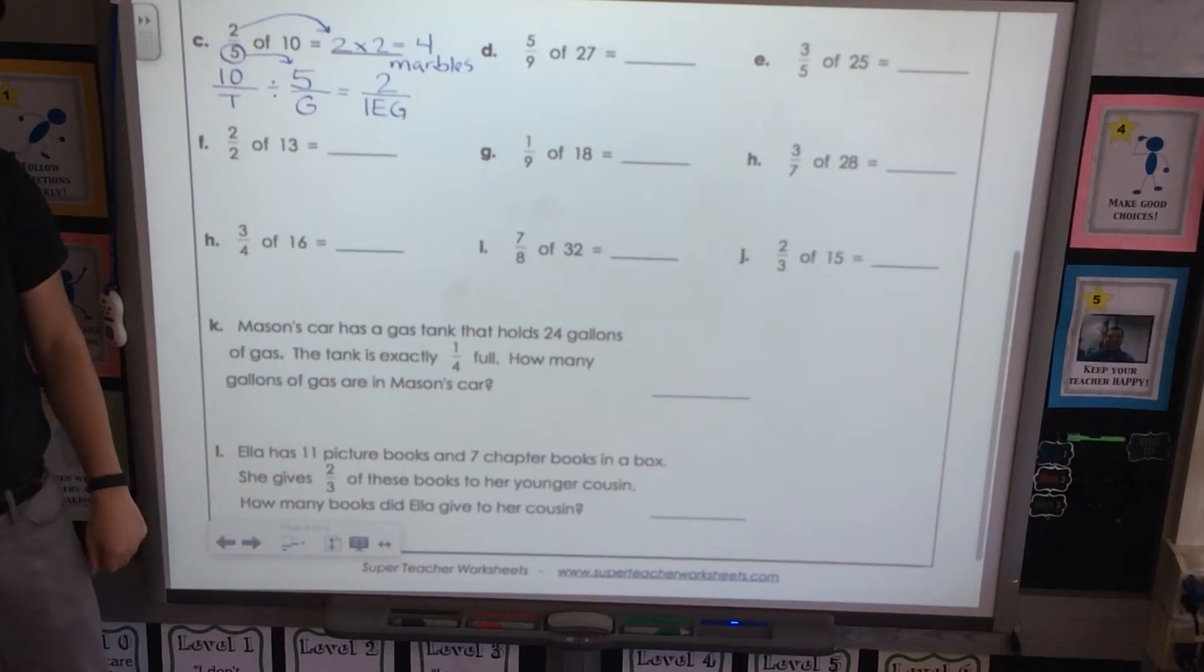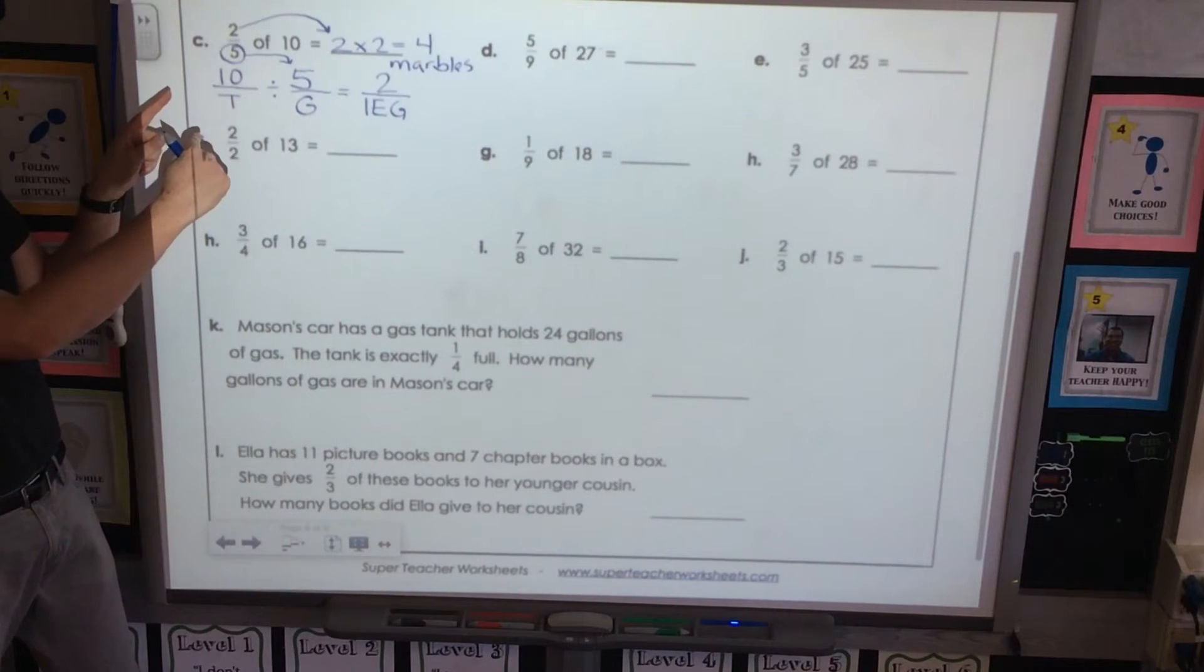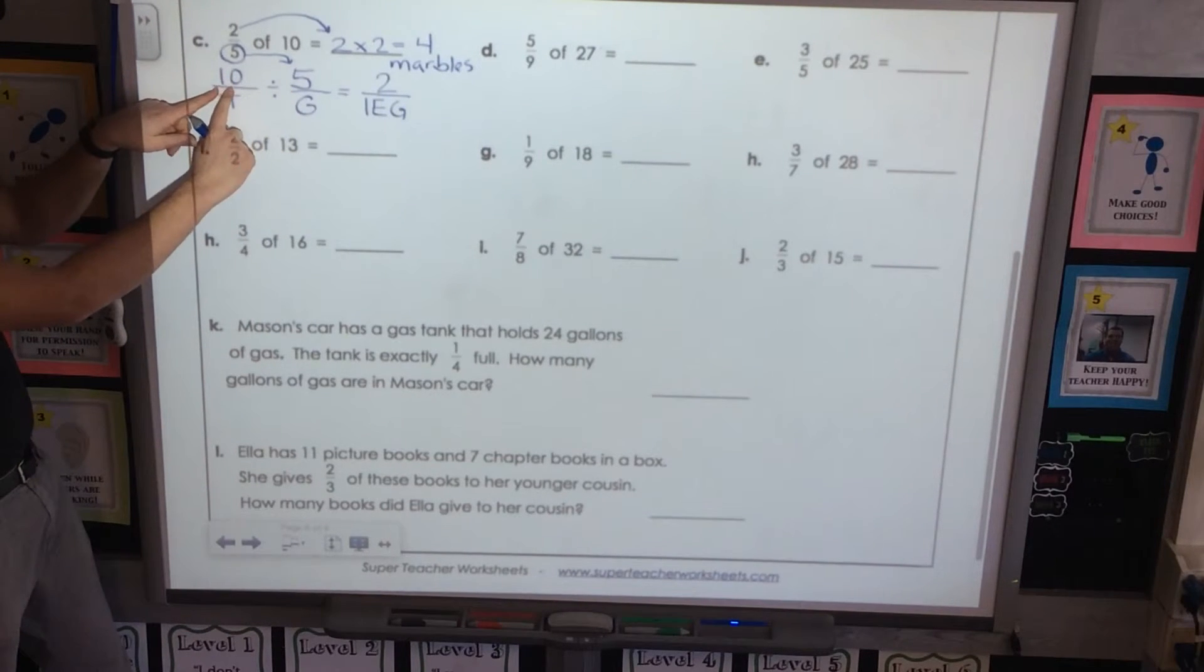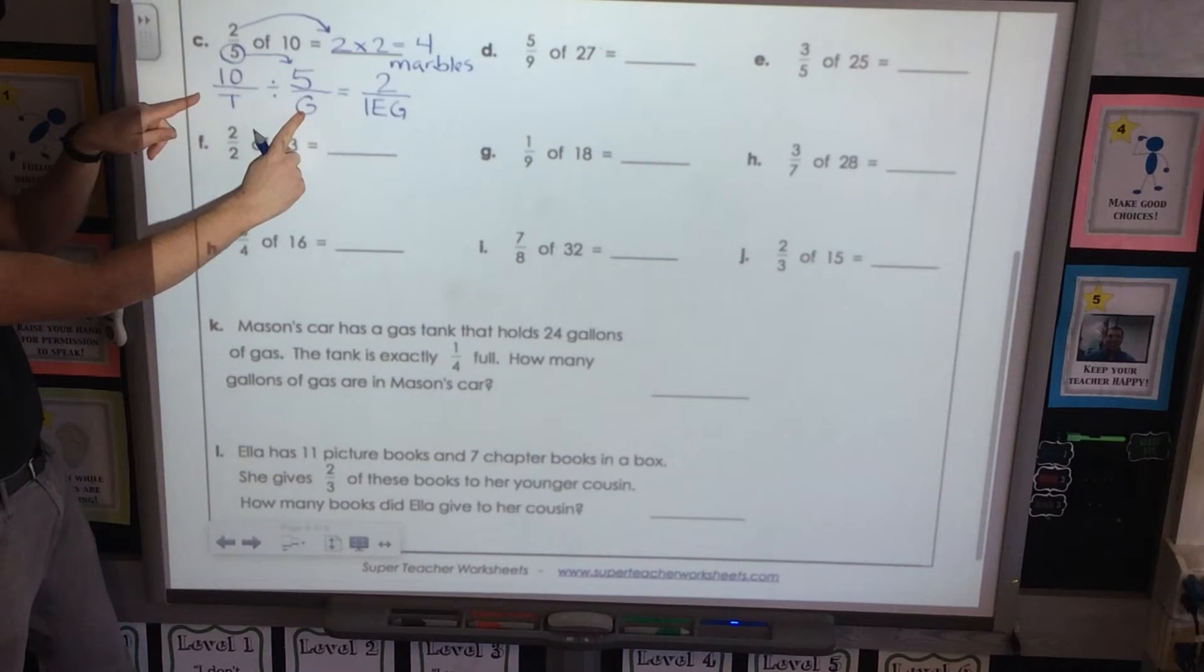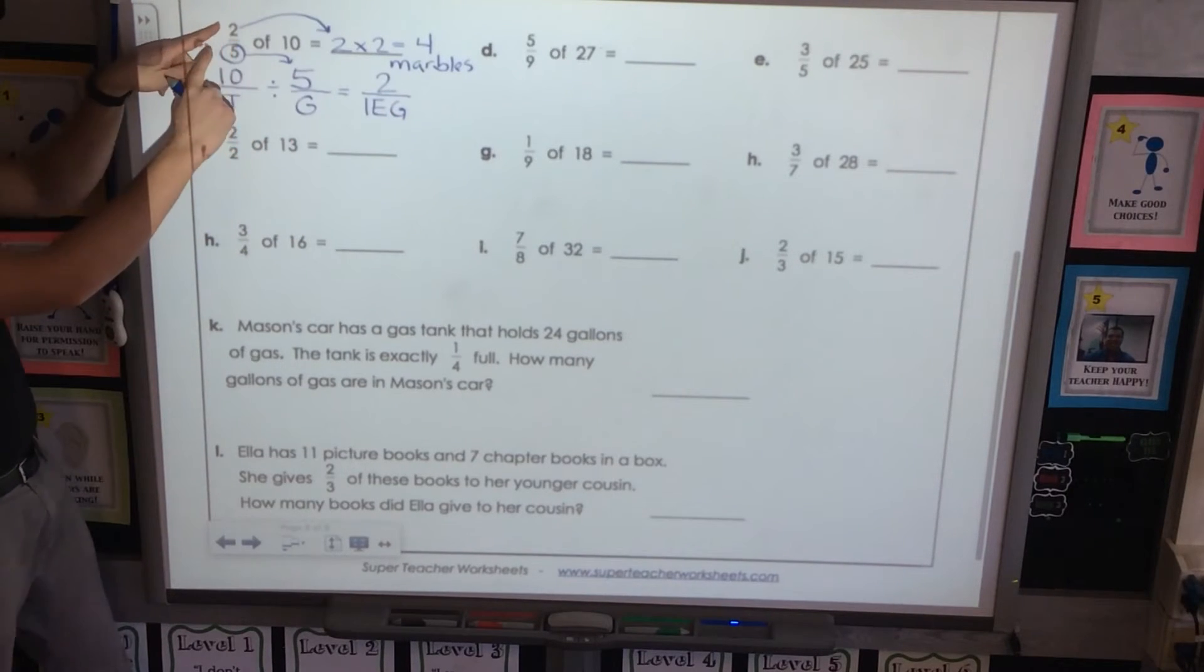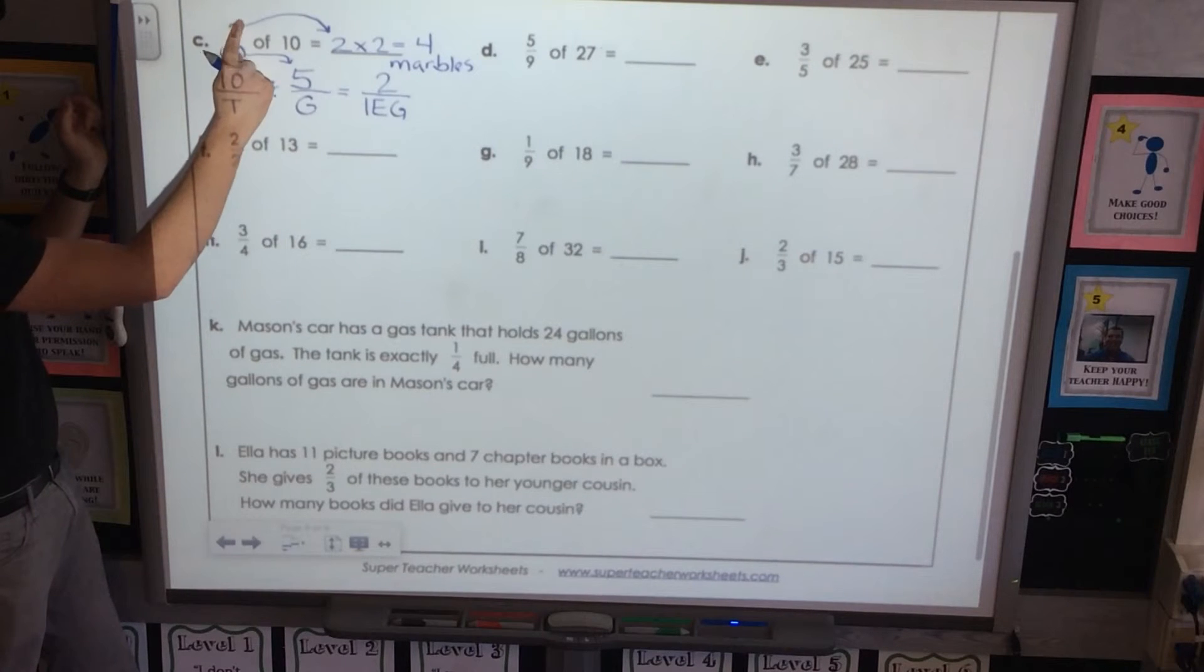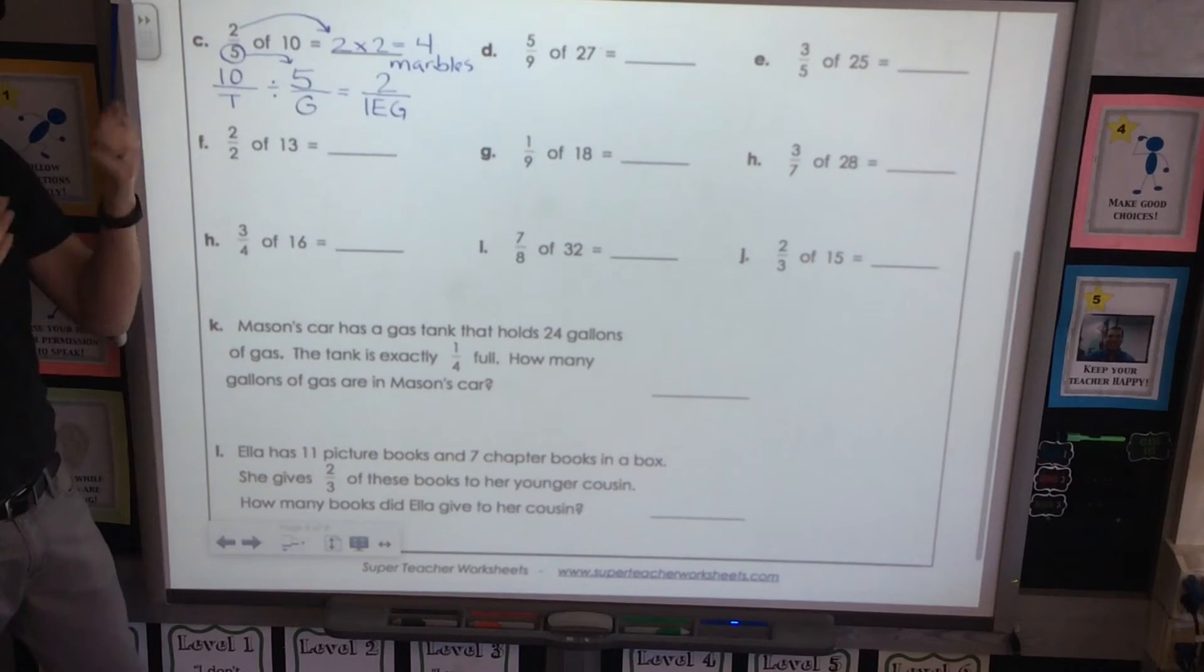So when you're doing this at home, every problem you're doing, even the word problems, go through these steps. Let's go through them together. First step is write your template. Fill it out. Write down the total. Write down the groups. Figure out how many are in each group. And then we're going to take our numerator and we multiply it by this number. We're saying there's two groups that we want to focus on of two, and that means four marbles. These are your steps to every problem.